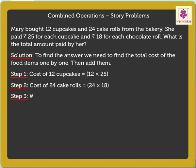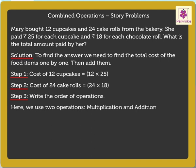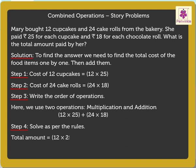Step 3: Write the order of operations. Here, we would be using two operations — multiplication to find the total amount spent on each food item, and addition to find the total amount spent. We get the order of operations as 12 into 25 plus 24 into 18. Step 4: Solve as per the rules. We first solve the operations in the brackets. 12 into 25 is 300, and 24 into 18 is 432.